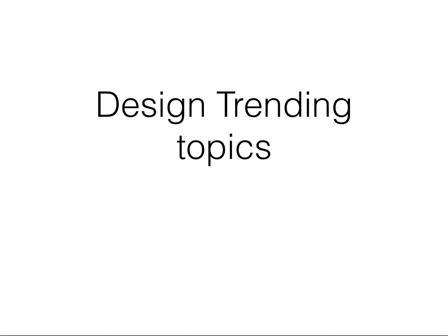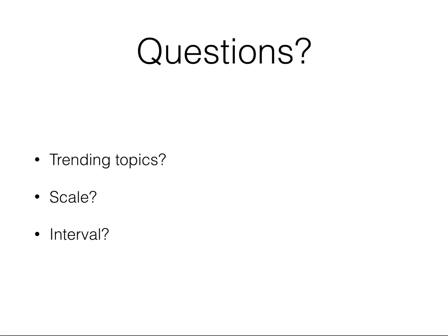Hi, so today we are going to discuss a system design problem. It's basically designing trending topics. So if you have used Twitter, you know in the sidebar they show the trending topics. We want to design a system for that. Let's look at some of the questions that we should be asking before we dive deeper into designing the system.